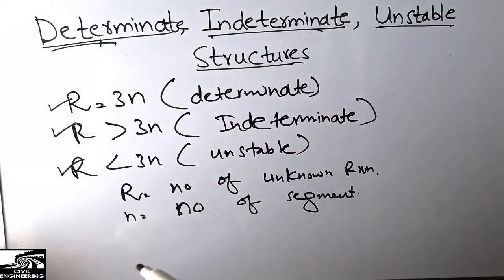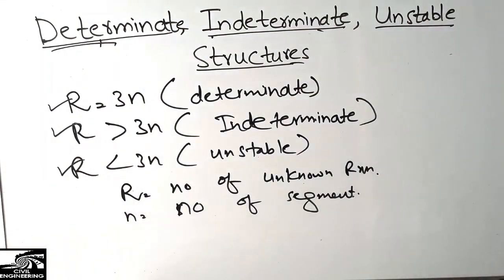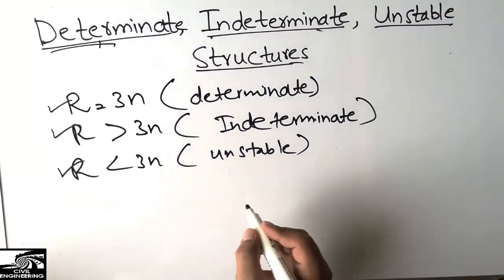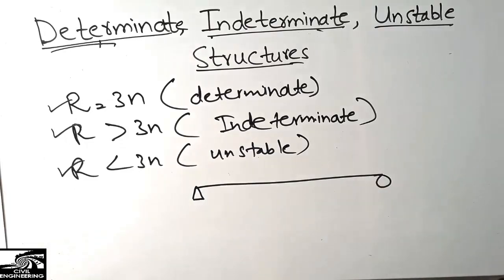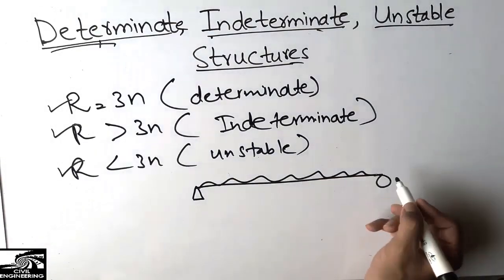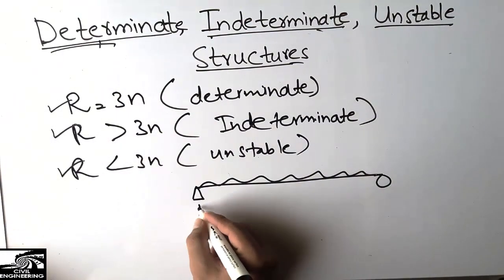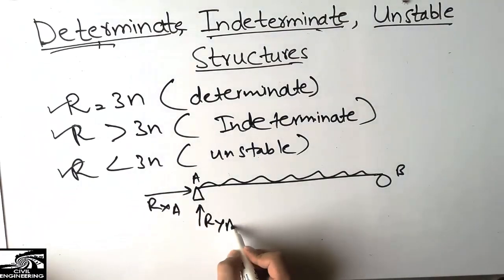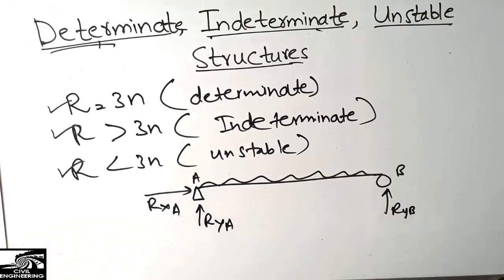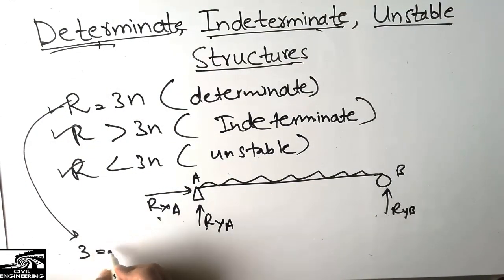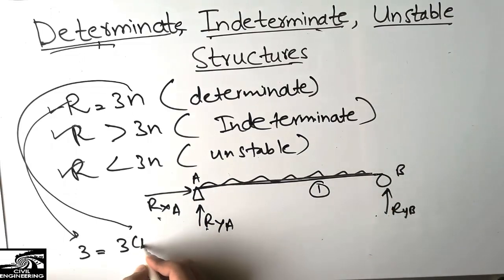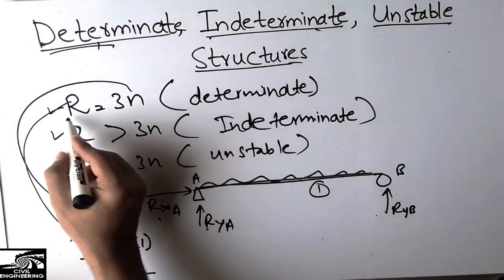Taking the example of a simply supported beam: with a load acting on it, the reactions are Rx and Ry at support A, and Ry at support B — that gives r = 3. The beam has only one segment, so n = 1, and 3n = 3. Since r = 3n (3 = 3), we call this a determinate structure.